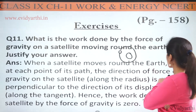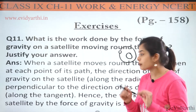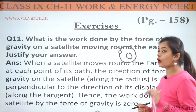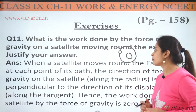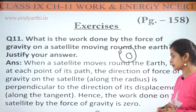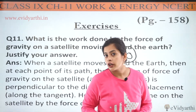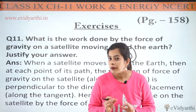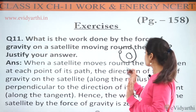When a satellite moves round the earth, then at each point of its path, the direction of force of gravity on the satellite along the radius is perpendicular to the direction of its displacement. This sentence is quite long and a little confusing, I know.